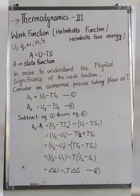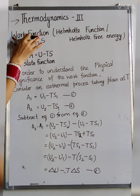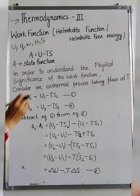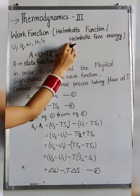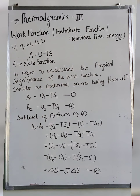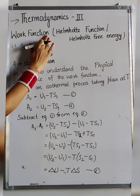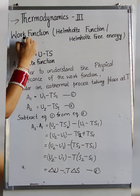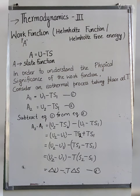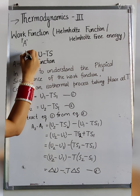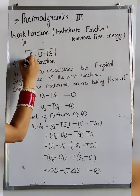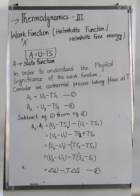Firstly, we study about the work function. Work function is also known as Helmholtz function and Helmholtz free energy. It is denoted by the symbol capital A. So A is equal to U minus TS, where capital U is internal energy, capital T is temperature, and S is entropy.